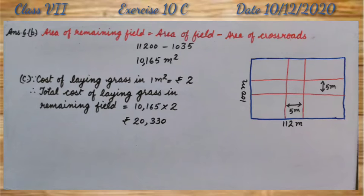C part, cost of laying grass in 1 meter square is given as rupees 2. Therefore, total cost of laying grass in remaining field is 10,165 multiplied by 2 that is rupees 20,330.